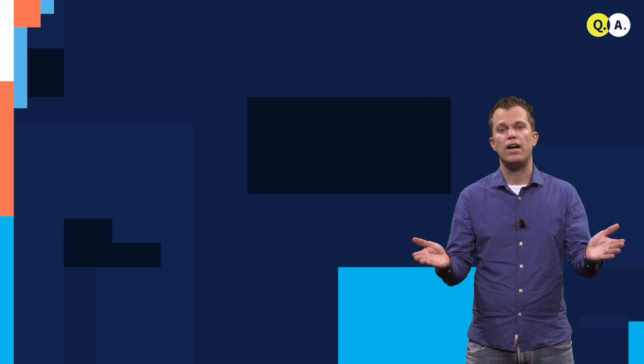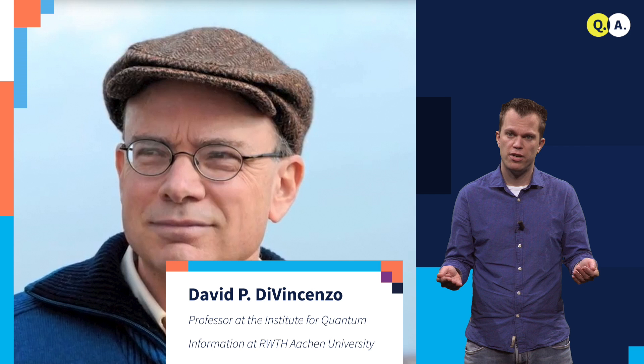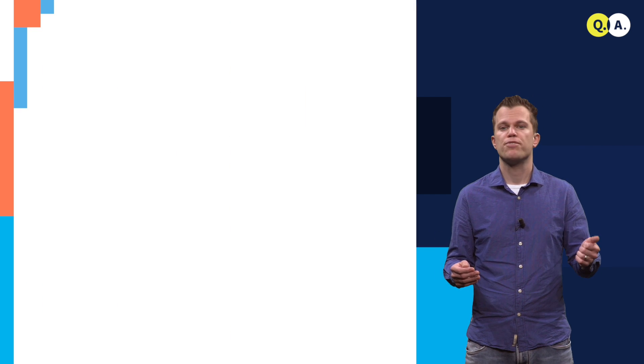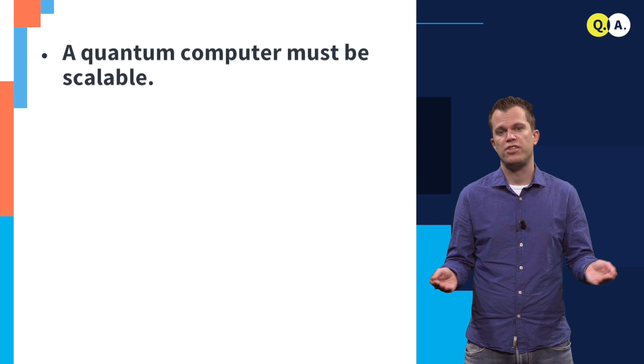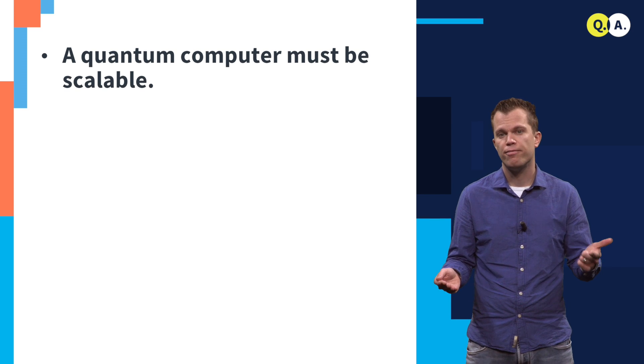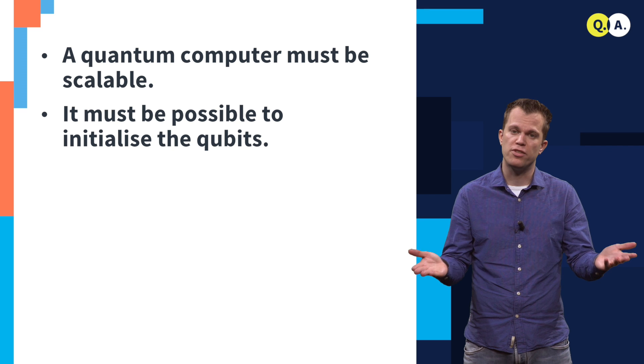What are the requirements to advance a system with a few qubits toward a quantum computer containing millions of qubits? In 2000, David DiVincenzo listed five key criteria. First, a quantum computer must be scalable. Second, it must be possible to initialize the qubits.